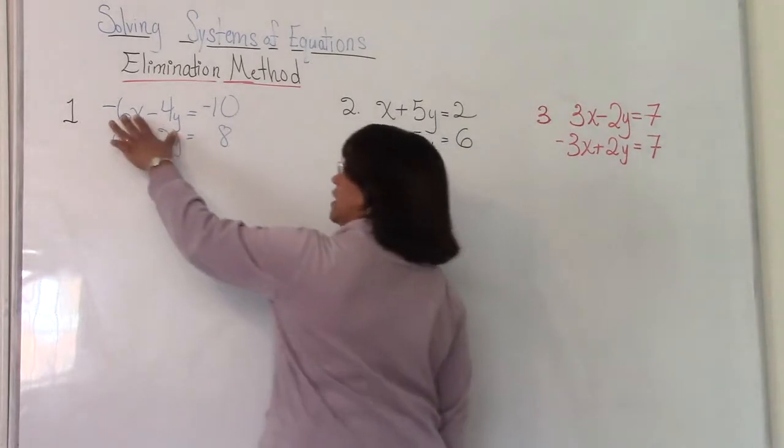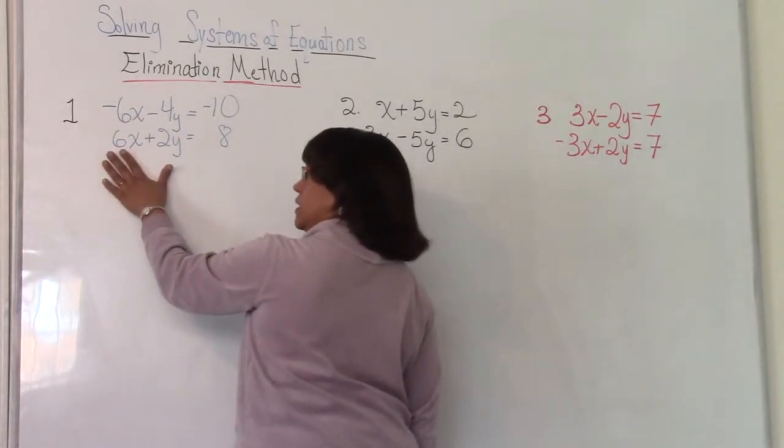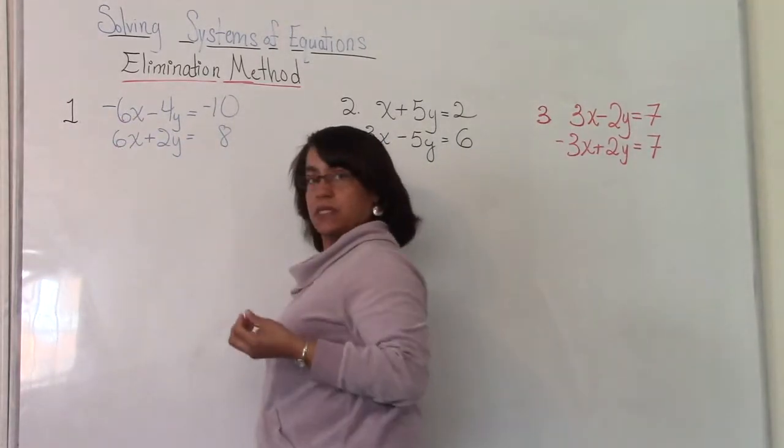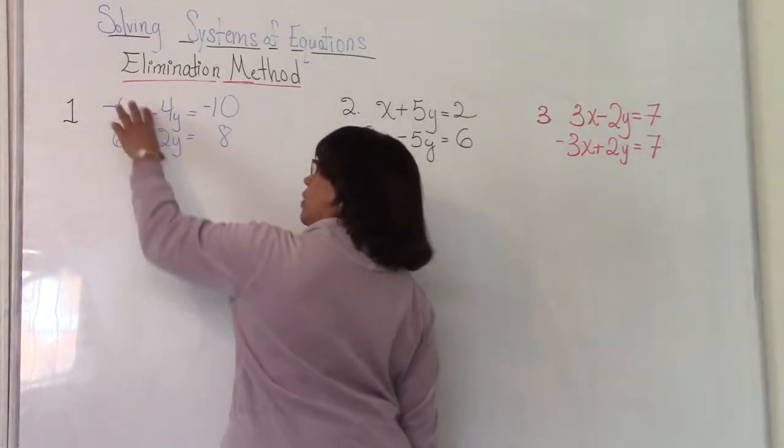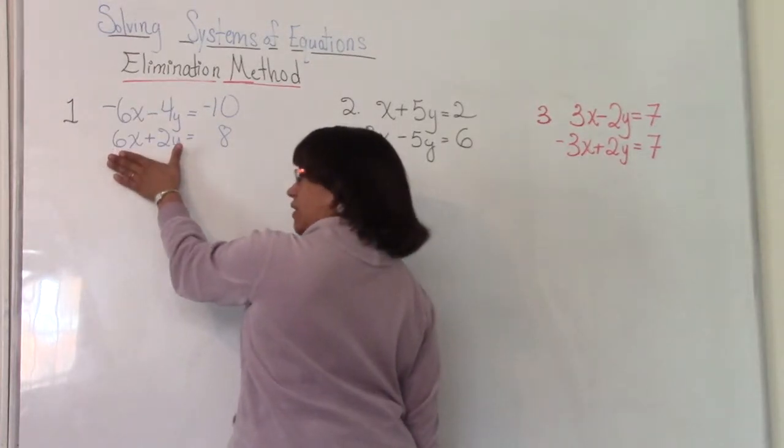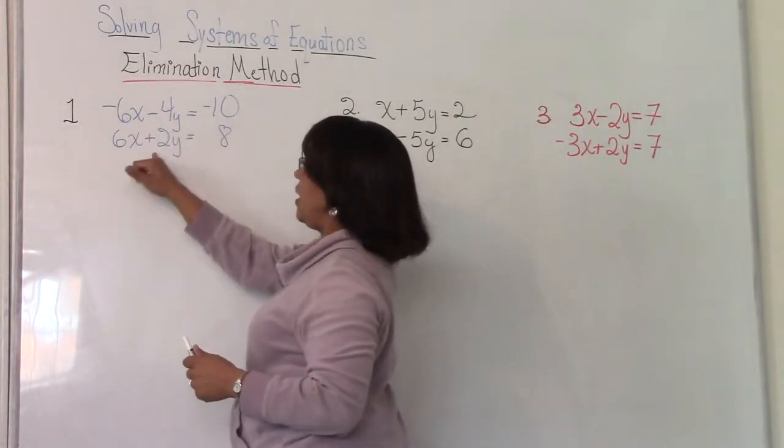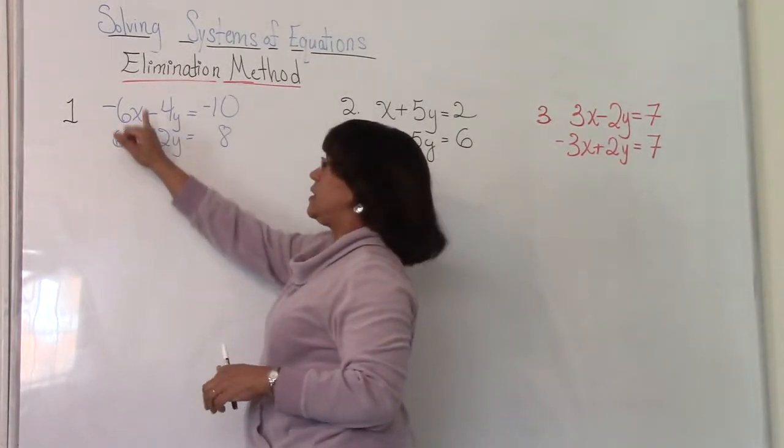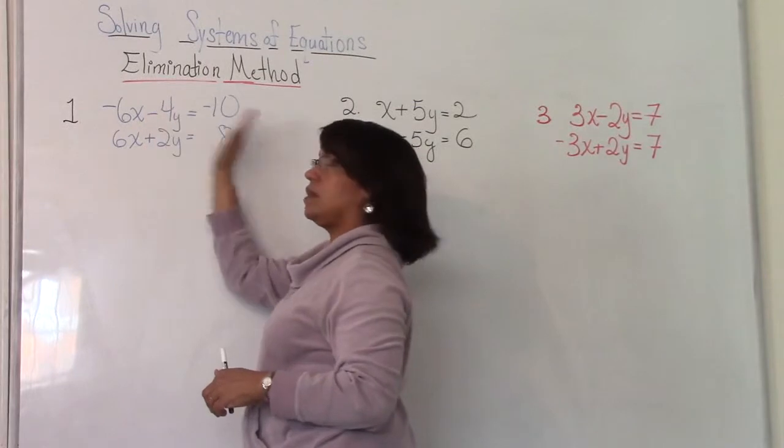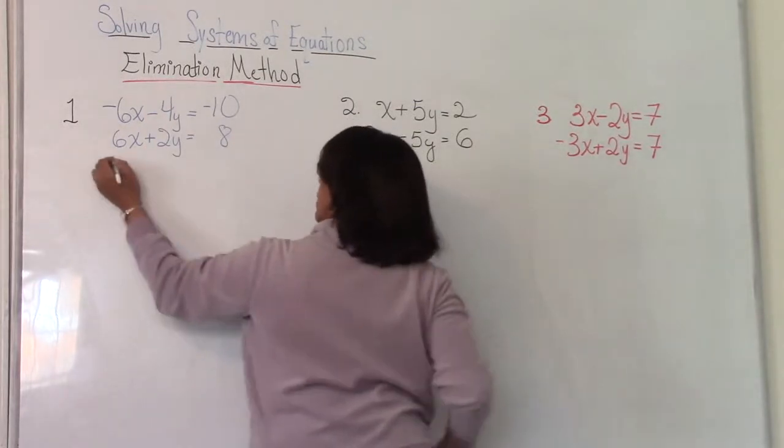We have negative 6x in one equation and positive 6x in the other. Those two are opposites. So that's what I mean. In one equation, you want it to have an inverse with something in the other equation. Negative 4y and positive 2y are fine because as long as my x's are eliminated, I want to solve for my y's. Okay, let's do it.